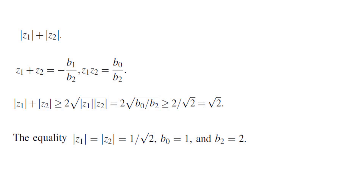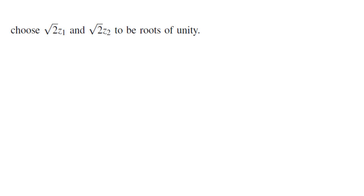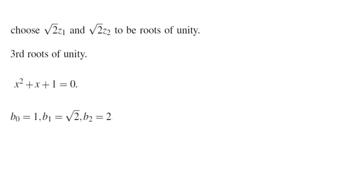For equality, b0 must be 1 and b2 must be 2. This means √2·z1 and √2·z2 must have absolute value 1, so it makes sense to think of them as roots of unity. If we choose second roots of unity, we get x² - 1 = 0, and one coefficient would be 0, so we don't do that. Instead, we choose third roots of unity, which satisfy x² + x + 1 = 0, so all coefficients are non-zero. Substituting x = √2·z, the leading coefficient becomes 2, the linear coefficient is √2, and the constant is 1, which satisfies the given inequalities. So the answer for degree 2 is 1/√2.